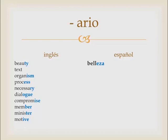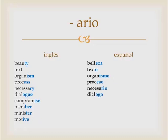The rest, however, you're only going to add an O or an I-O, and you go from English to Spanish rather quickly. Text is 'texto,' organism is 'organismo,' process is 'proceso,' necessary is 'necesario,' dialogue is 'diálogo,' compromise is 'compromiso,' member is 'miembro,' minister is 'ministro,' and motive is 'motivo.'